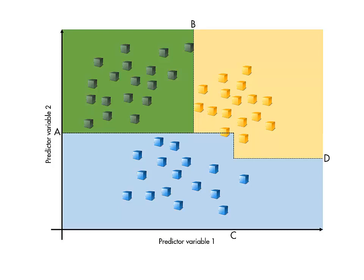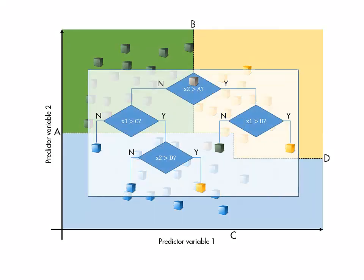Once a tree classifier is trained, making predictions is extremely quick because it requires nothing more than a handful of binary decisions.